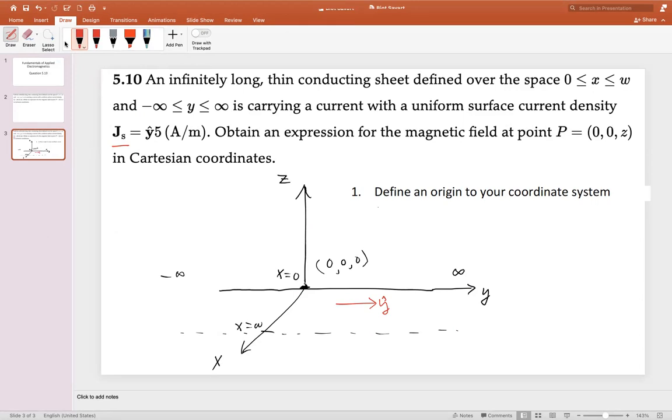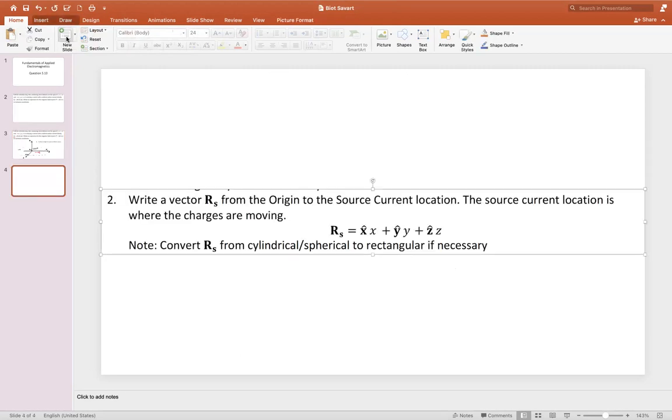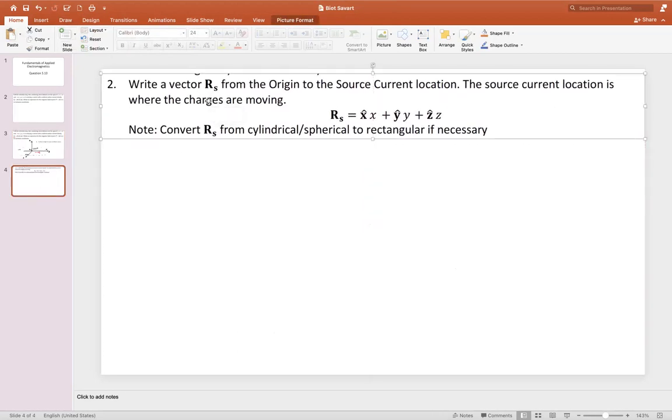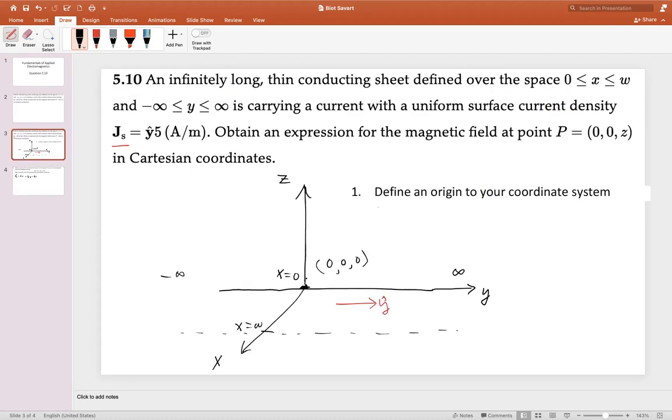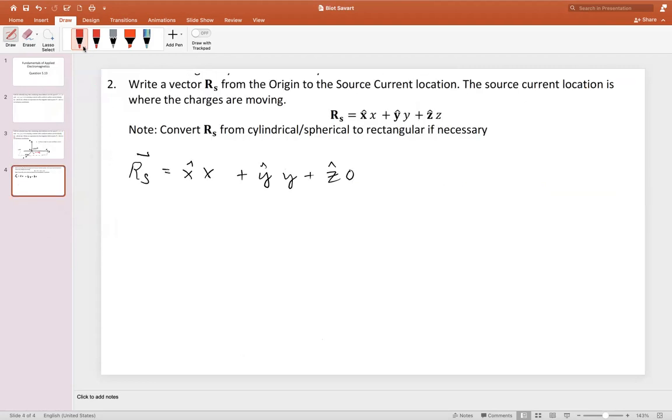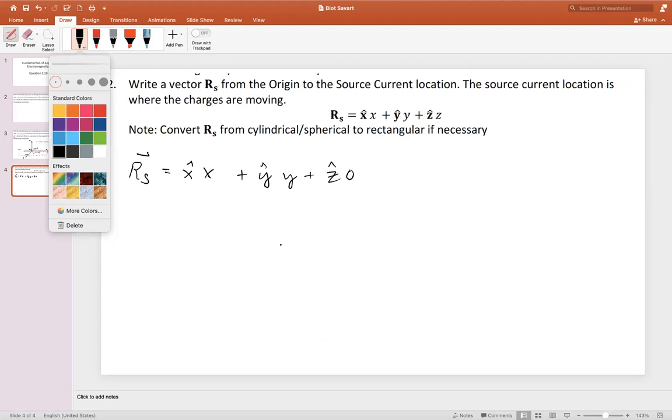Next, let's write a vector Rs from the origin to the source current location. We will make this vector Rs from the origin to the source current location. When we do this, we say that Rs in the X direction goes some X amount. In the Y direction, we have it in some variable Y amount, but in the Z direction we have nothing. So from the origin to any source on this plane, our current can be anywhere along here. If I want to draw a point, it goes in X and Y. So I have written a vector Rs that goes from the origin to the source current location.